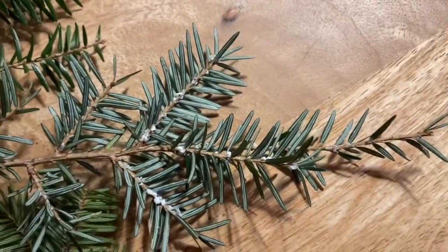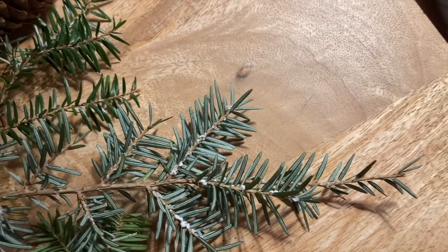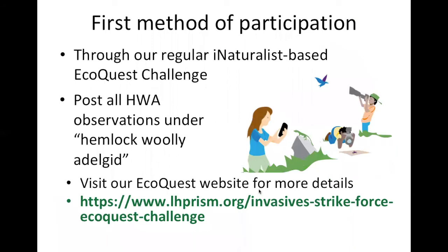We really hope to see you out there. We are about to start our Wooly Bully Mapping Challenge — a winter mapping challenge that runs from February 12th to March 12th. We would love your participation, which is a collaboration with iMap Invasives, the clearinghouse for reporting in New York State. New Jersey residents can participate too, because invasive species know no boundaries. Just because we know it's in most counties in New Jersey and New York doesn't mean we know every stand has it, so mapping is still critical. If you've been a veteran EcoQuest Challenge participant, just use iNaturalist to report and post all observations to Hemlock Woolly Adelgid.